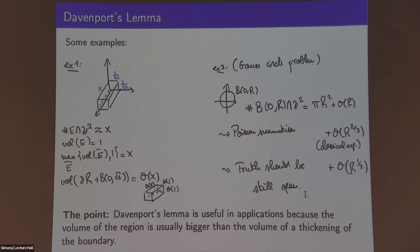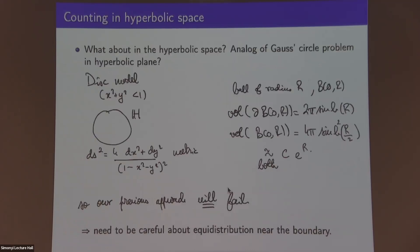Getting these cancellation results can be quite hard — getting exactly the right amount of cancellation is difficult. The point is that when applied in practice, Davenport's Lemma is useful because the volume of a region is usually bigger than the volume of a thickening of the boundary. But there are a lot of interesting arithmetic problems where this is not the case, in different geometries. Now I'll explain what happens in hyperbolic spaces.